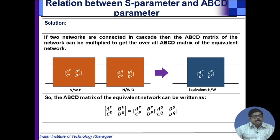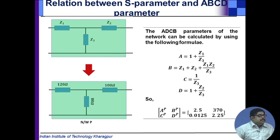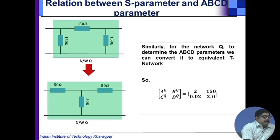It is easier since this is a cascade of two networks, we can convert to ABCD matrix. The ABCD matrix of the equivalent network can be written like this. ABCD parameters of a T network you can easily find out, this is your B.Tech level knowledge. The first network T network you can find the ABCD matrix to be this, then the pi network, either you can convert to T network and then find the ABCD matrix.